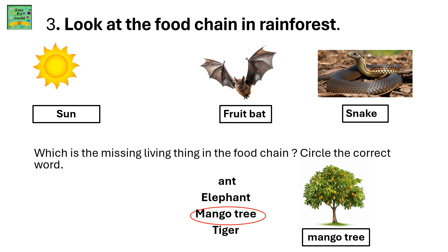Look at the food chain in a rainforest: sun, fruit bat, and snake. You have to mention which living thing is missing from the food chain. The options are: ant, elephant, mango tree, or tiger. The answer is mango tree.